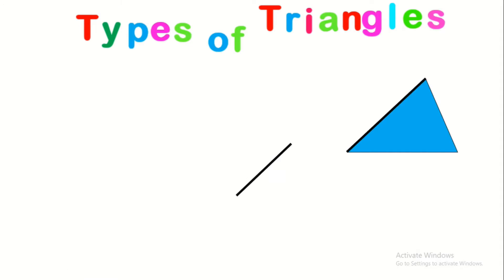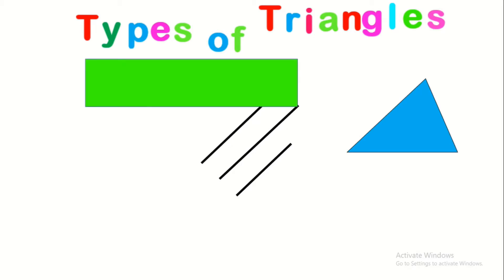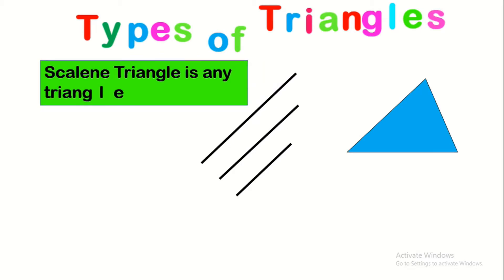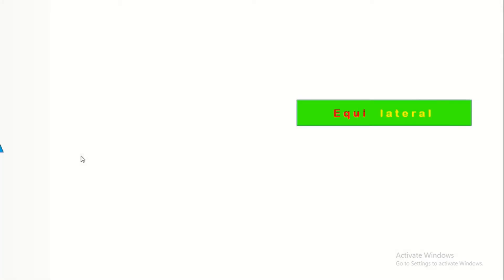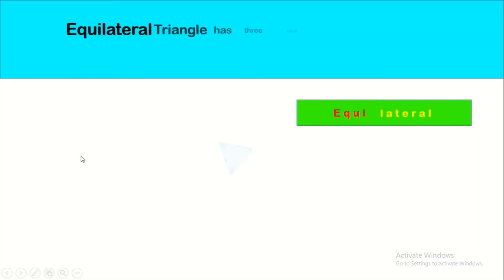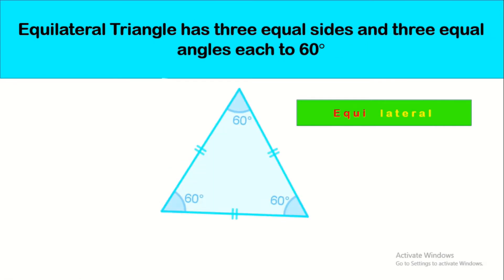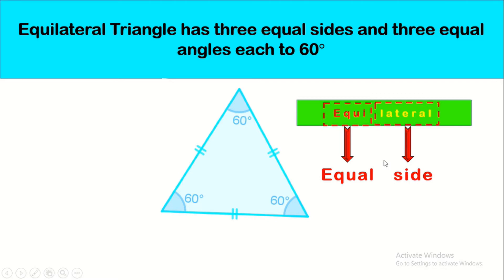Now let's look at the natures, or types, of triangles. The first one, in general, is the scalene triangle. It has neither equal sides nor equal angles. The most important types are: first, the equilateral triangle. Equi means equal, lateral means sides.